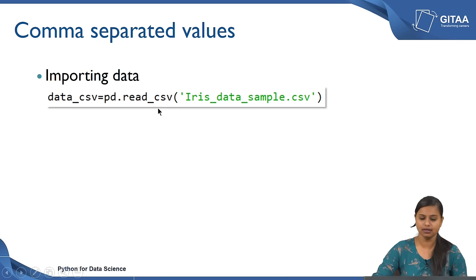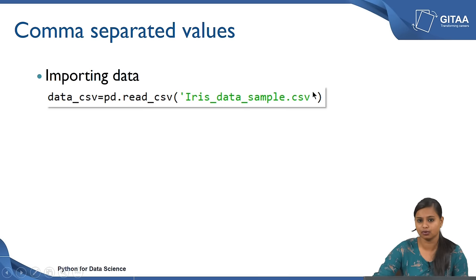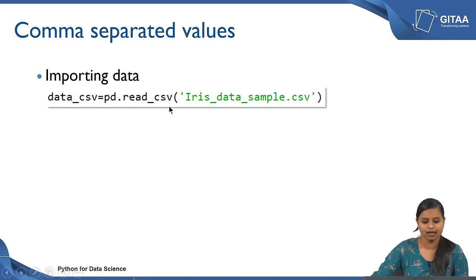'read_csv' is the command that is used to read any CSV files into Spyder, and that comes from the package called pandas — so I have used 'pd.read_csv'. Inside the function you just need to give the file name: 'iris_data_sample', with the extension .csv given within single quotes. These two things are mandatory to read any file into Spyder — the extension, and enclosing the file name inside single or double quotes. I am saving into an object called 'data_csv', which becomes a data frame when you execute this line.